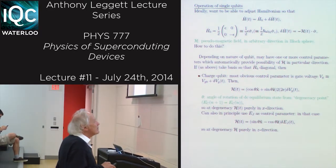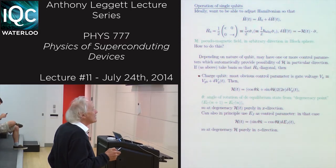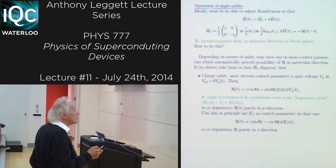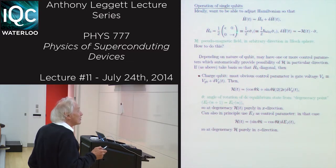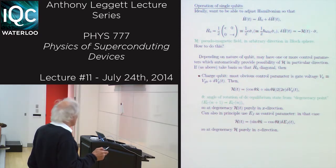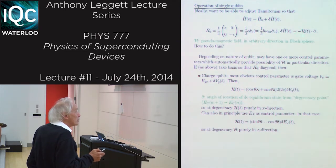Ideally, we would like to be able to adjust the Hamiltonian so that we have some kind of fixed term plus some controlled correction. As previously when we were discussing errors, we can choose a basis such that our fixed Hamiltonian is diagonal. And then our perturbation, the time-dependent term, can always be expressed in pseudospin language as a pseudospin vector dotted into some kind of pseudomagnetic field. So we would like to be able to provide an arbitrary pseudomagnetic field.